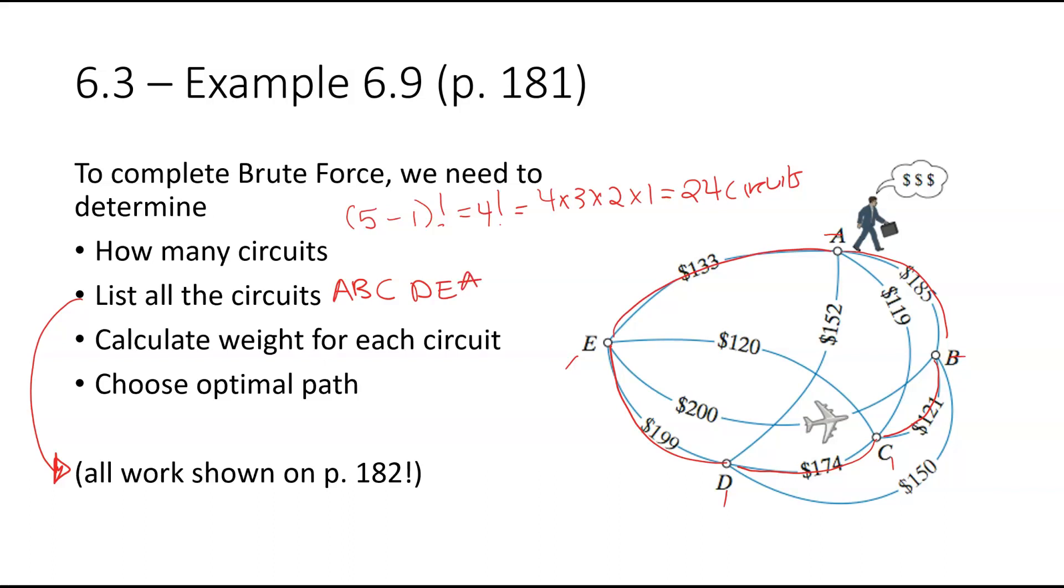And then, so that would be one of my 24 circuits. Then I calculate the weight. So the calculation would be, in this case, 185 plus 121 plus 174 plus 199 plus 133. And that's going to give me the weight for that tour. And I'm going to do that 23 more times to choose my optimal path. Now, again, go look at the table because you're going to need to make a table just like that for your project.